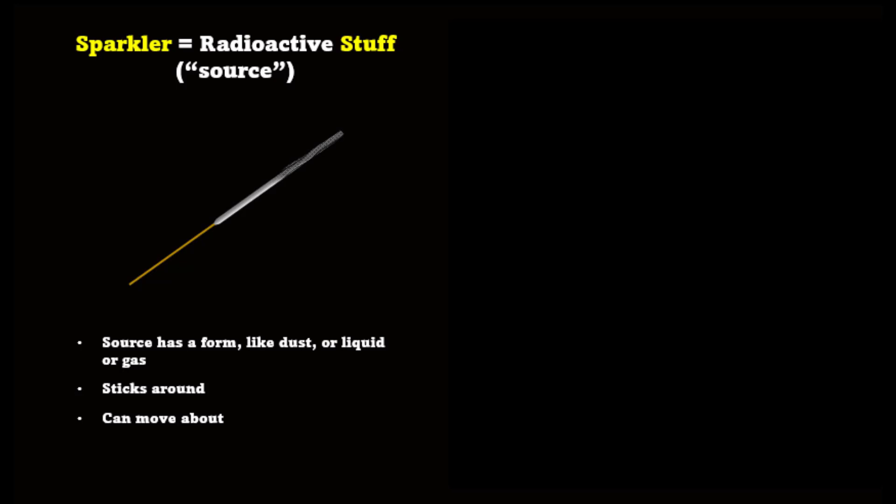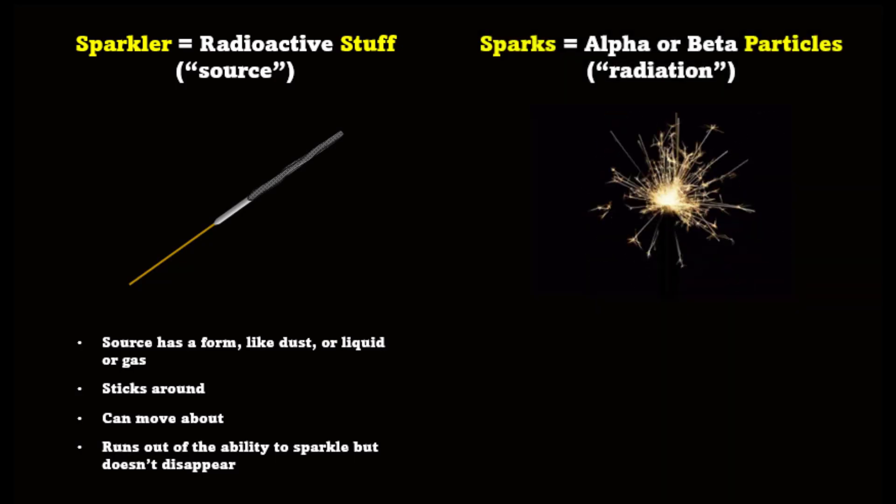As the sparkler gives off sparks, it runs out of its ability to sparkle, but it doesn't disappear, though it does change. In the same way radioactive stuff doesn't disappear, it just runs out of its ability to emit radiation. Alpha and beta particles are like the sparks.